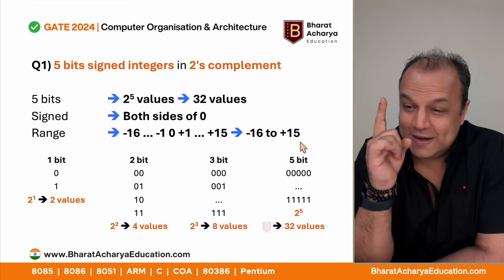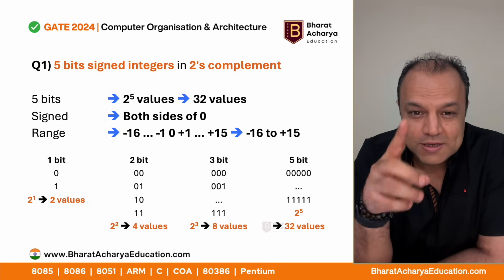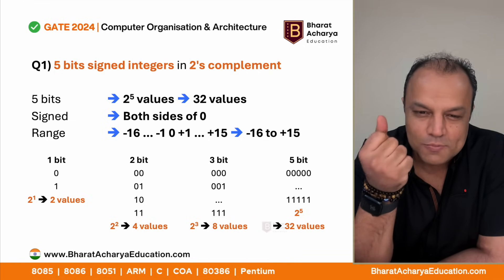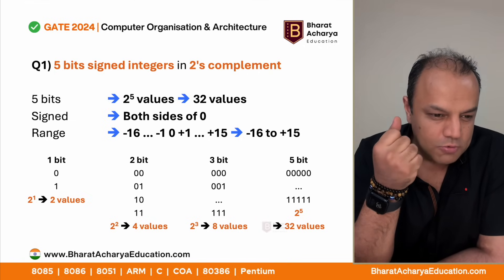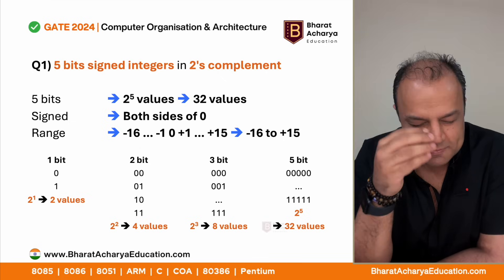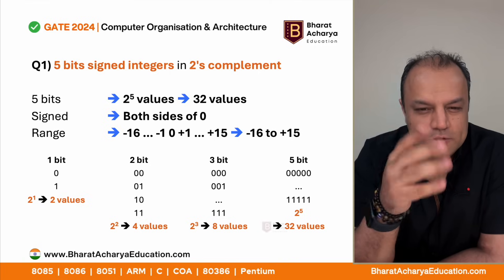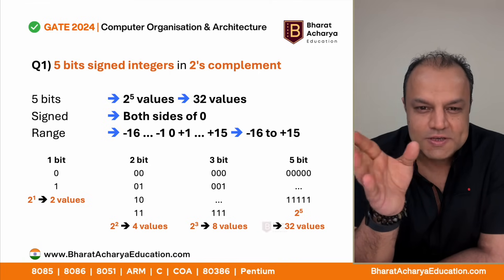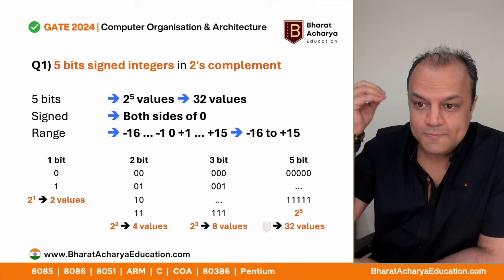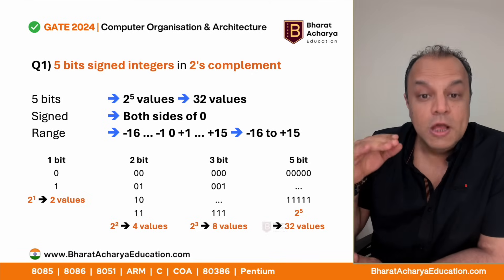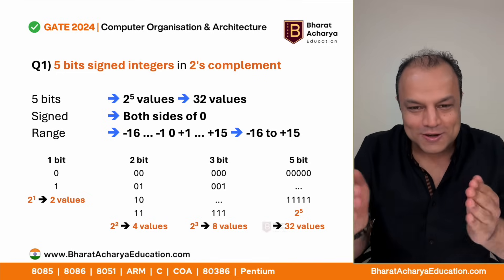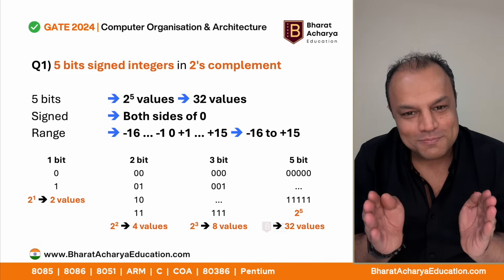Your 16 positive numbers go from 0 to 15, and minus 1 to minus 16 are the 16 negative numbers. So your range is minus 16 to plus 15. In the exam this should take five seconds. You see five bits signed number - instantly you realize 32 numbers, 16 on each side, 0 to 15 and minus 1 to minus 16. You need this range to know what is an overflow and underflow.